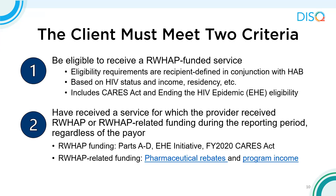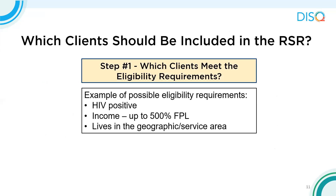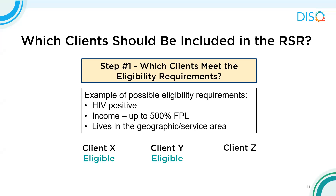So let's walk through an example. We start by reviewing clients to determine if they meet eligibility requirements. In this example there are three clients. The eligibility requirements are that the client is HIV positive, has a federal poverty level of up to 500%, and lives in the geographic service area. Clients X and Y meet all three eligibility requirements, but client Z does not because they do not reside in the service area. Therefore, client Z should not be included in the RSR.